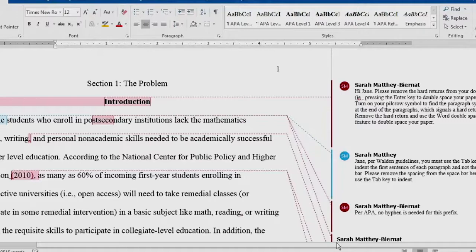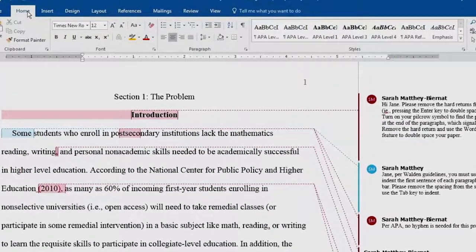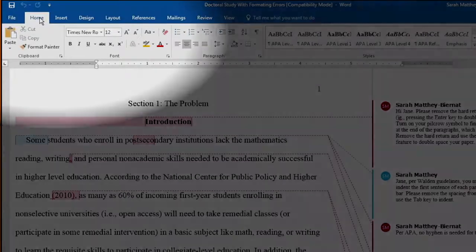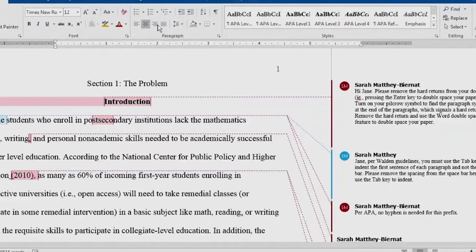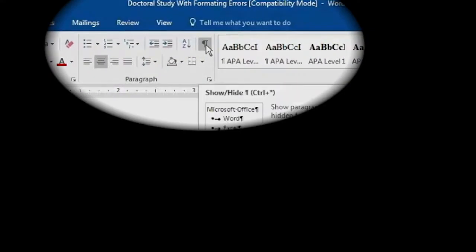In Microsoft Word, the Pilcro symbol is located underneath the Home tab, which is in the top left-hand corner of the screen. To turn on the Pilcro symbol, we click on this paragraph-looking symbol.